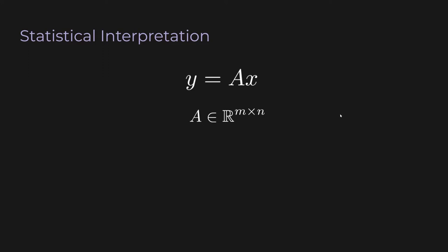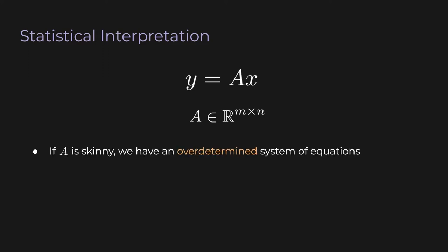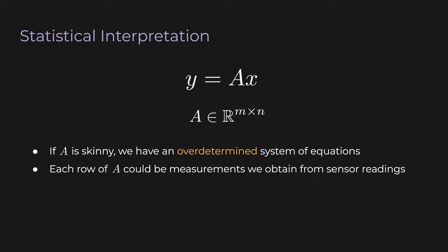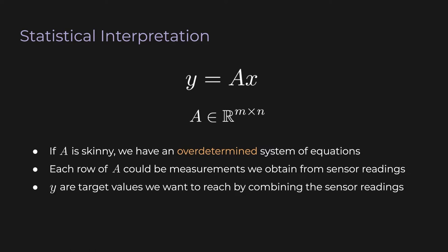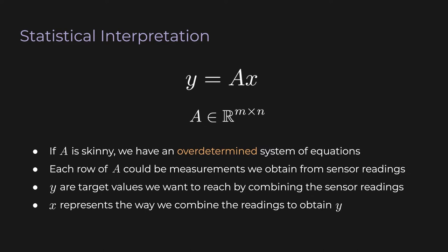Let's look at the statistical interpretation of least squares. If A is skinny, then we have what is called an overdetermined system of equations — more constraints than variables. Each row of A could be measurements from sensor readings. Y would be target values we want to reach by combining the sensor readings, and x represents how we combine them — we take linear combinations of the columns of A, weighted by x, and add them to get y.